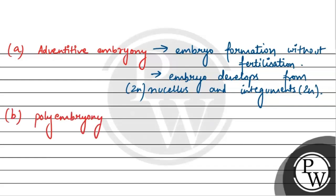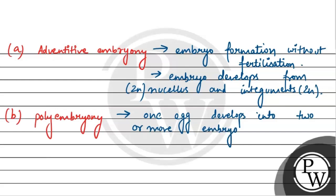Second option jo humein given hai — that is Polyembryony. Polyembryony mein kya hota hai jaise humans mein twins ka development ho jata hai, aise hi yeh same process plants mein hone ko kehte hain Polyembryony. Isme kya hota hai ki one egg develops into two or more embryos. Ek se zyada embryo ka formation hona ek egg se — usko polyembryony bolte hain. Aur jitne bhi embryo form honge, like two, three, four — woh genetically identical hote hain.